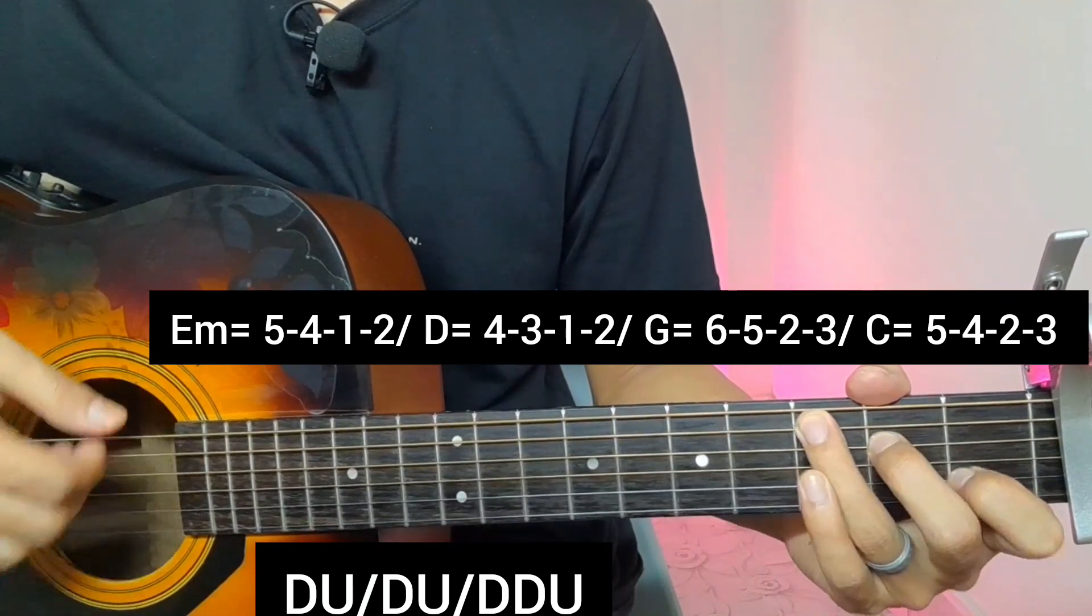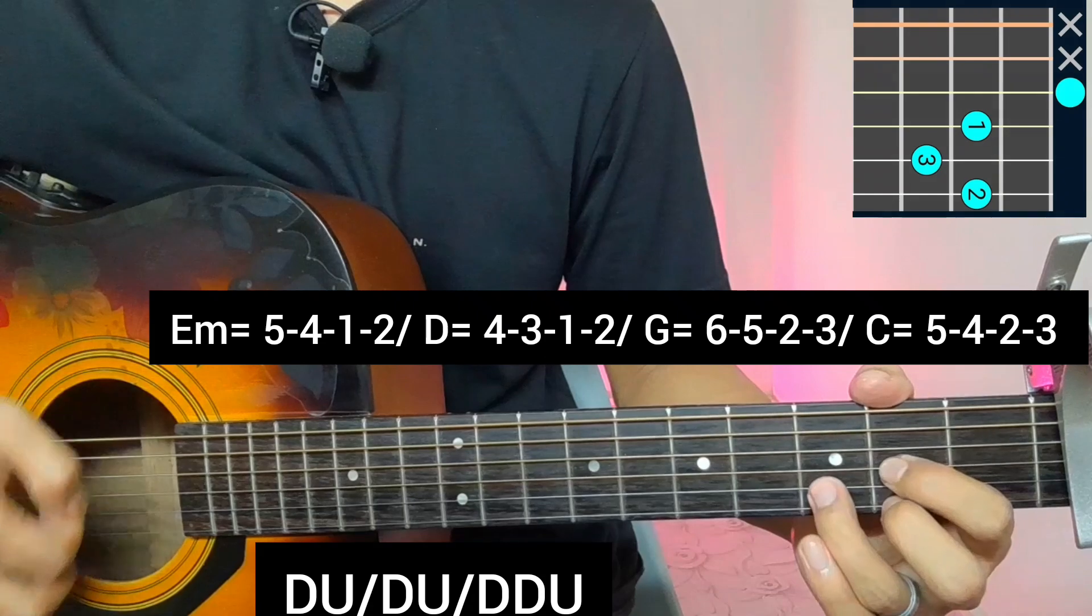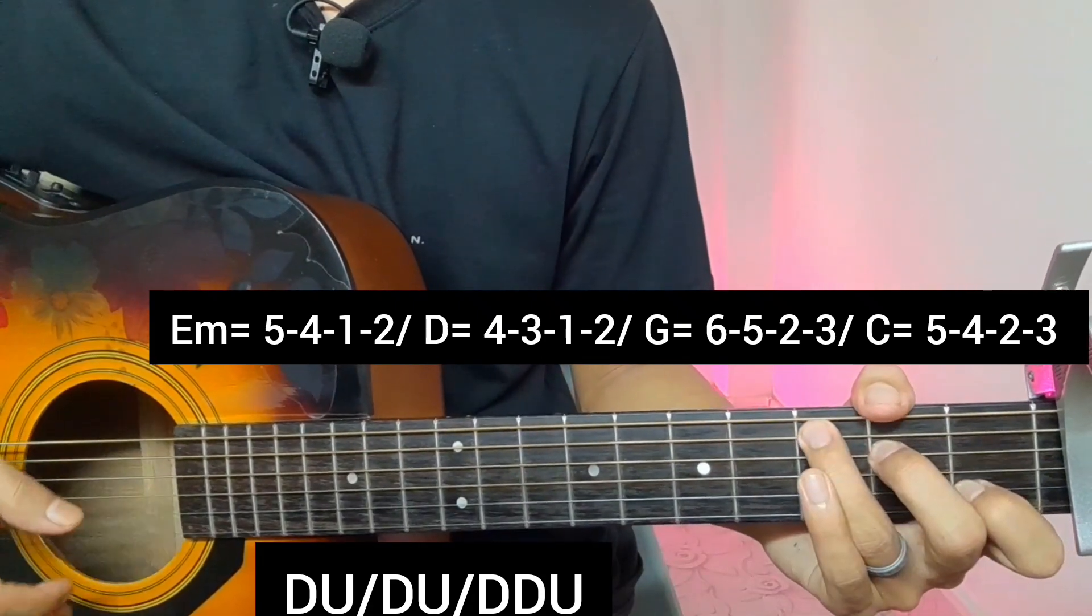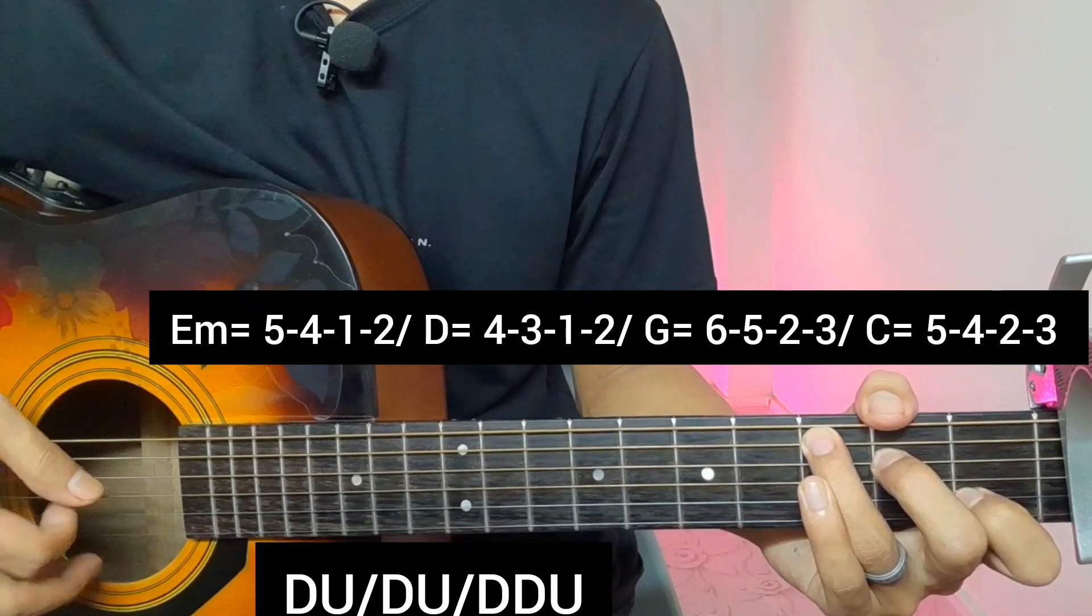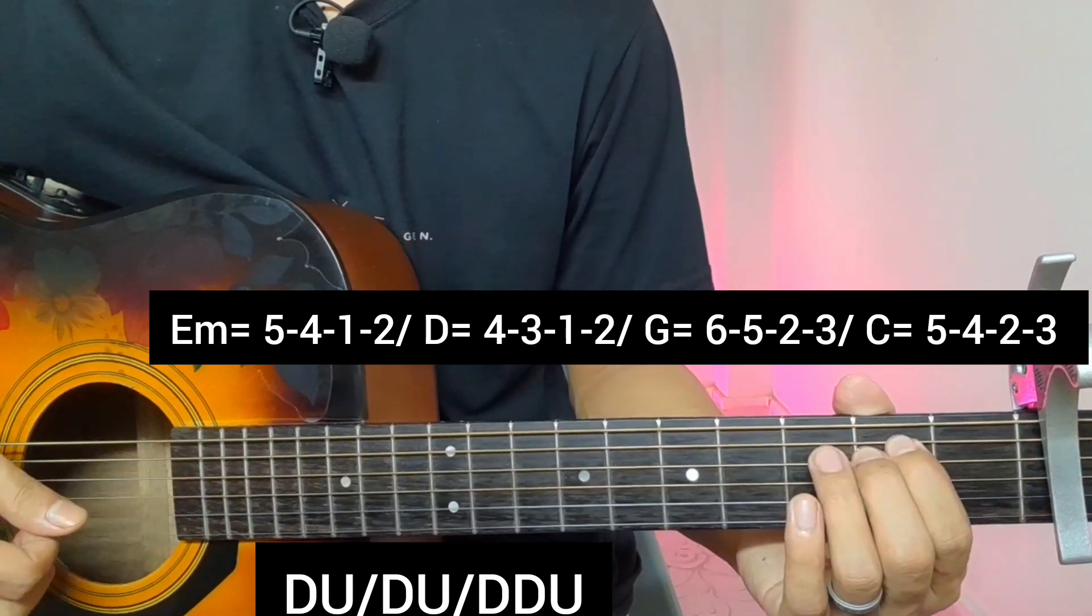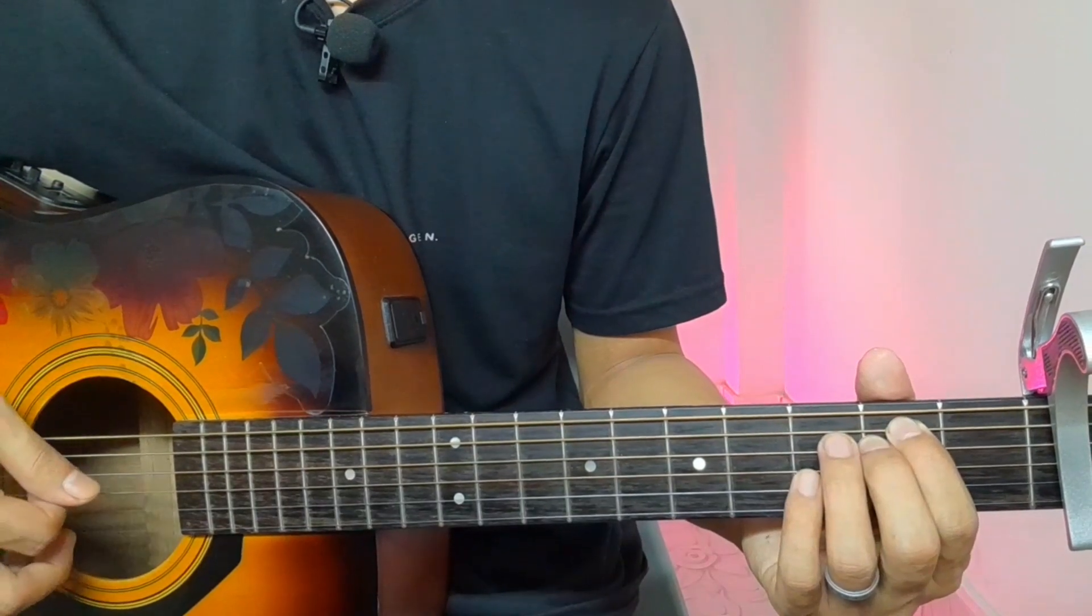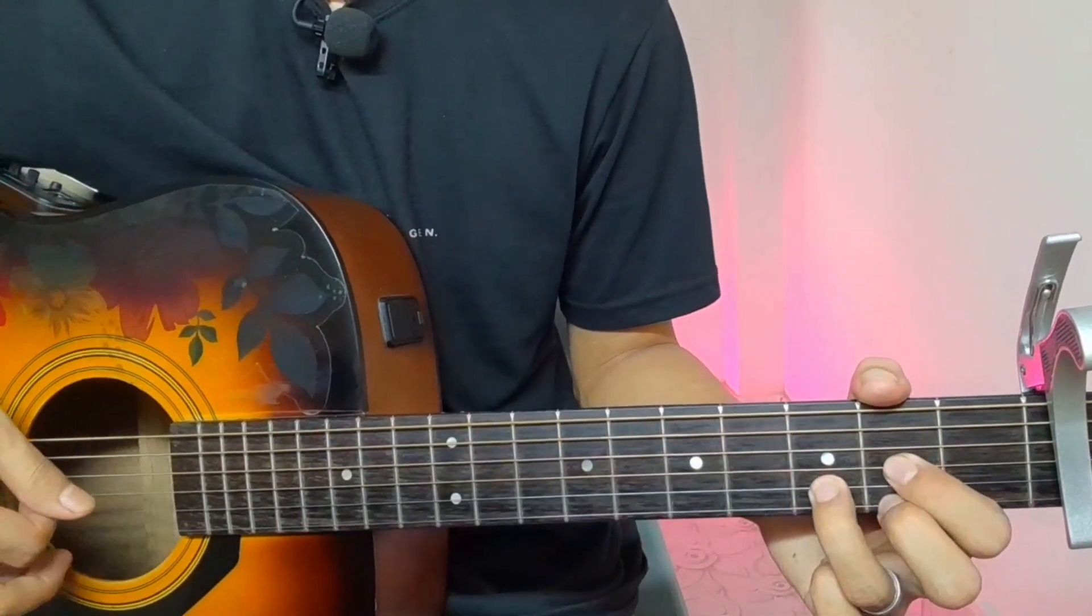That's the progression using E-minor, D-major, G-major, and C-major chords. I'll give you the nice strumming pattern. Practice slowly to get steady, and if you found this helpful, please like and subscribe.